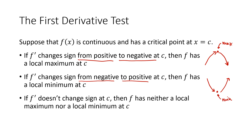Now, if your sign of your derivative doesn't change, then you have neither a local max nor a local min. That would be a situation where your function was going up, it leveled out and had a horizontal tangent line, but then it kept going up. Or the function was going down, it stopped, it leveled out, and then it kept going down — again, that would be neither a max nor a min.